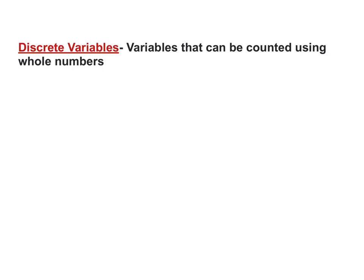First of all, discrete variables are variables that can be counted using whole numbers. So if it involves a decimal or a fraction, it's not discrete. Whole numbers, meaning we can count them, zero on up.